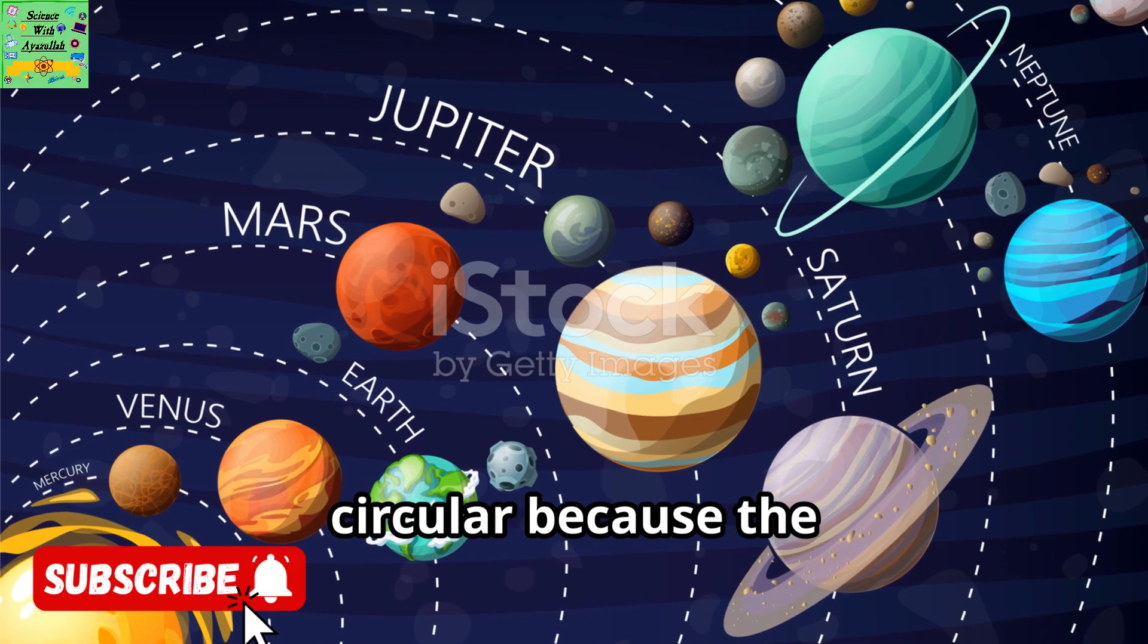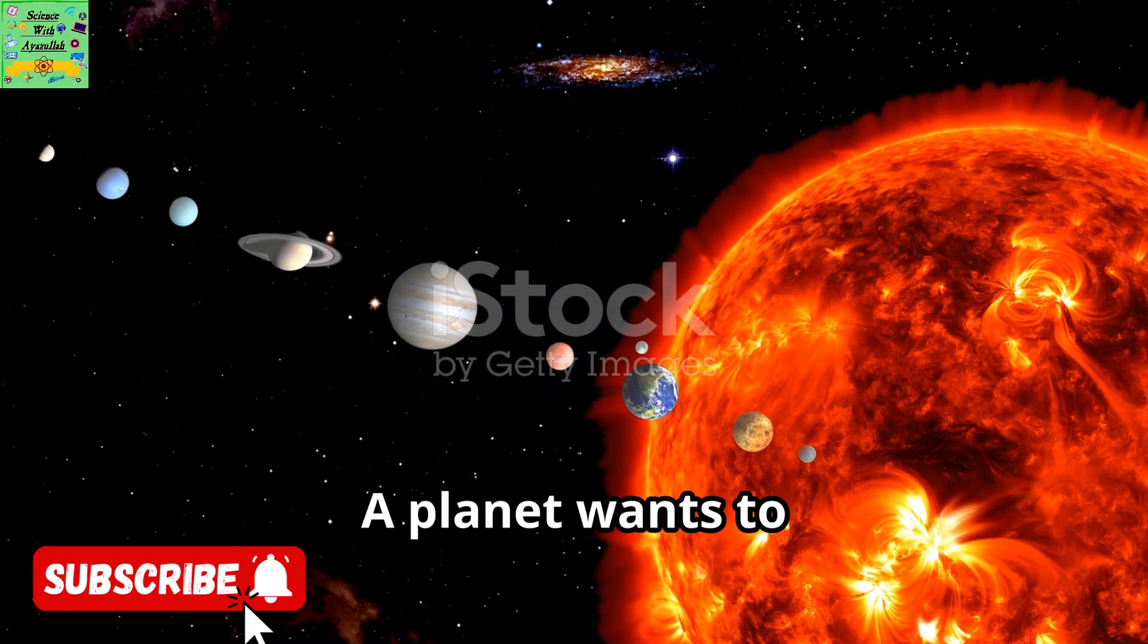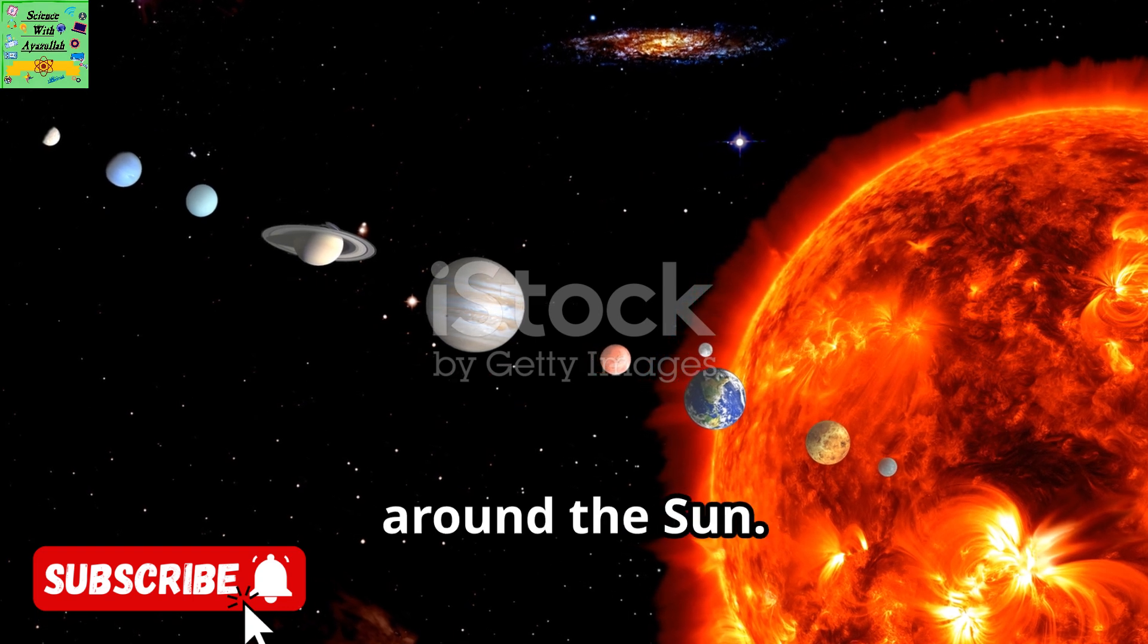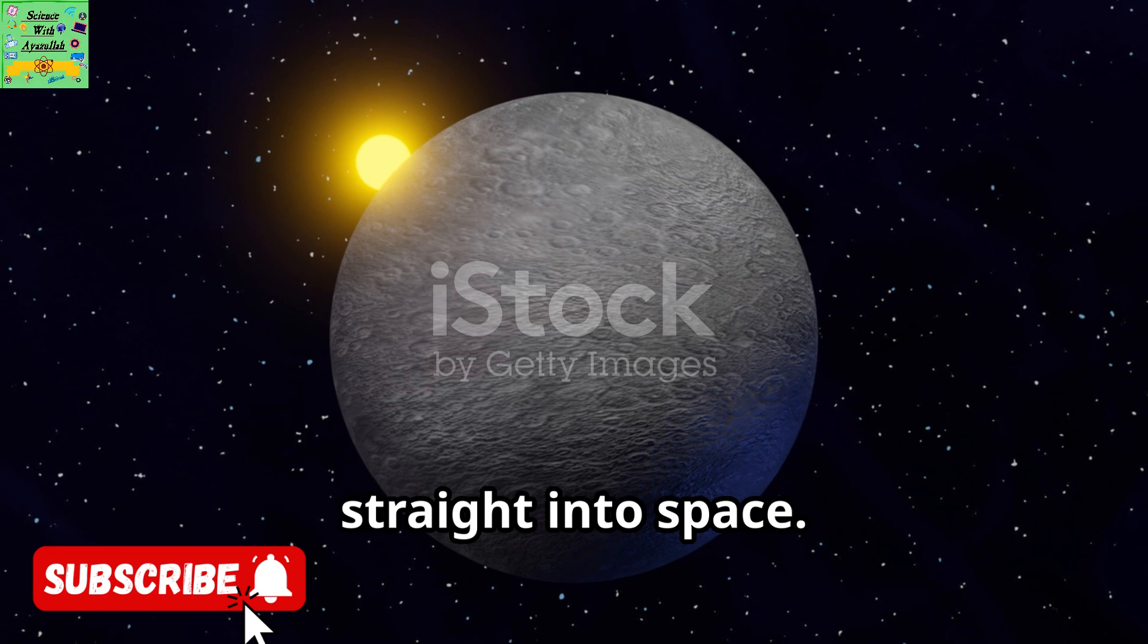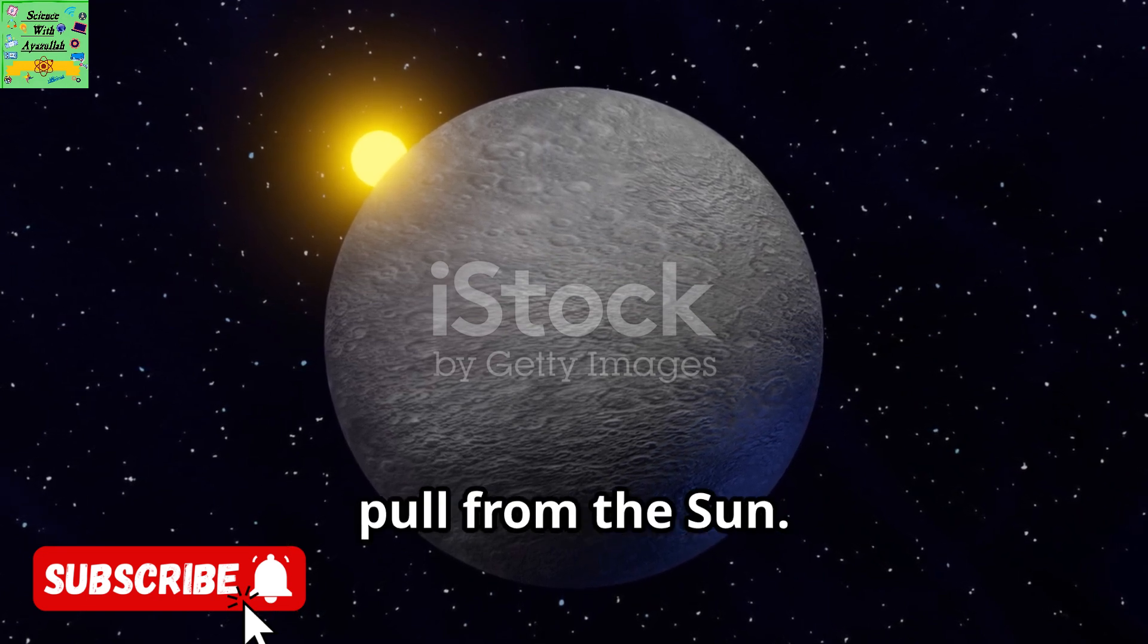Orbits are almost circular because the Sun's pull is nearly constant at a planet's distance. A planet wants to move in a straight line, but gravity pulls it inward. That makes it curve around the Sun. If gravity didn't act, the planet would go straight into space. Mercury orbits fastest because it feels the strongest pull from the Sun.